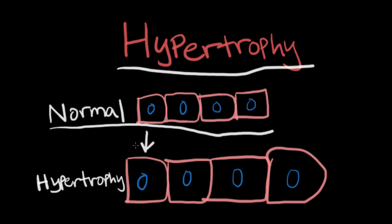However, some cells such as the cardiac muscle cells cannot undergo mitosis to form more cells, which is hyperplasia, but they still have to adapt in order to meet this new demand for an increase in workload. So how does the cell do it? It must increase the functional components within itself, which in turn increases the size of the cell.